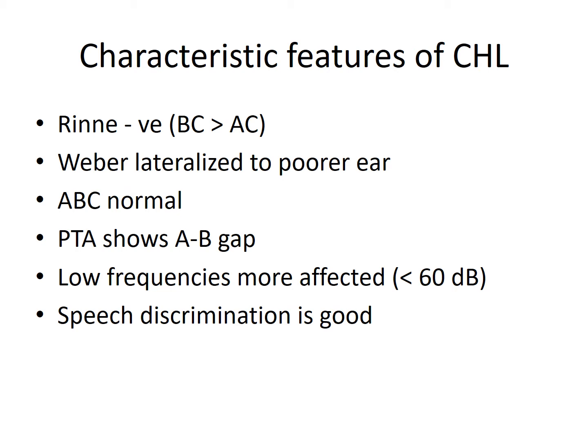The characteristic features of Conductive Hearing Loss are: on Tuning Fork Test, the Rinne Test will be Negative — meaning Bone Conduction will be better than Air Conduction. Then the Weber Test will be lateralized to the Poorer Ear. If one ear is normal and the other has Conductive Hearing Loss, the Weber will lateralize to the side with Conductive Hearing Loss. If both sides have Conductive Hearing Loss, Weber will lateralize to the side with more Conductive Hearing Loss — that is the Poorer Ear.